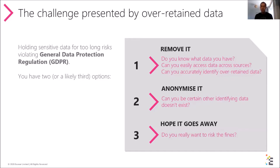Either option one or two can seem like a mammoth task. If you choose to remove the data, it requires you to search all of it and know what you've got that is both sensitive and old enough that it should no longer be retained. Digital data often leaves a trace — copies and duplicates may reside in forgotten file servers and databases. If you choose to anonymize it, you've got to be certain that other information doesn't exist that could be used in conjunction to identify an individual.